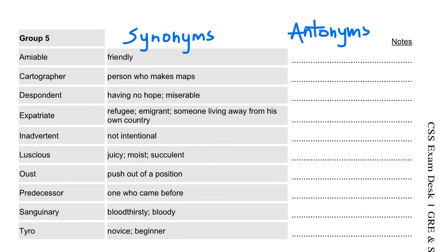First word is amiable. This is an adjective and it means friendly. If you want to describe a person's pleasant nature, then it will be amiable.